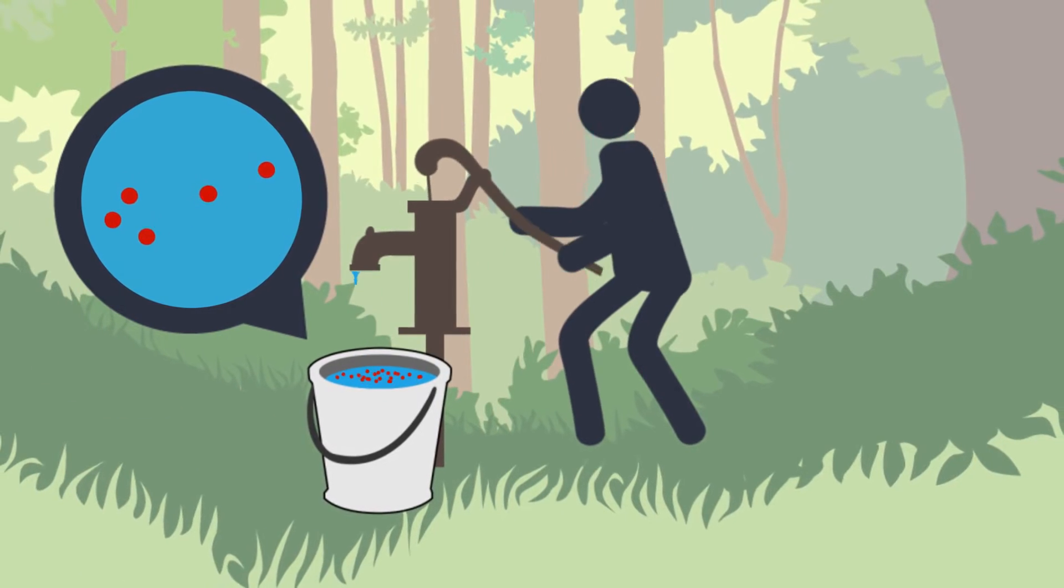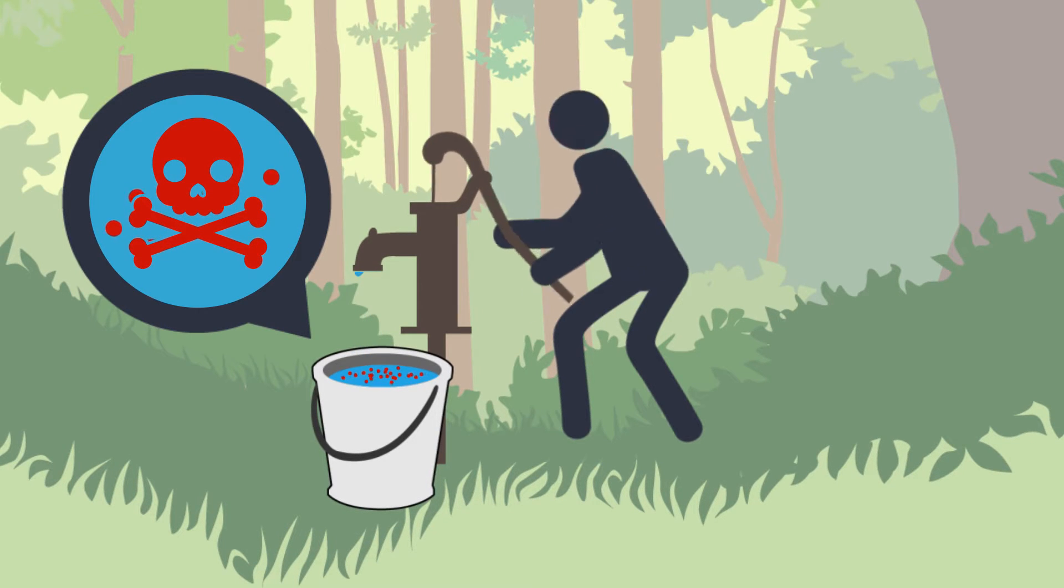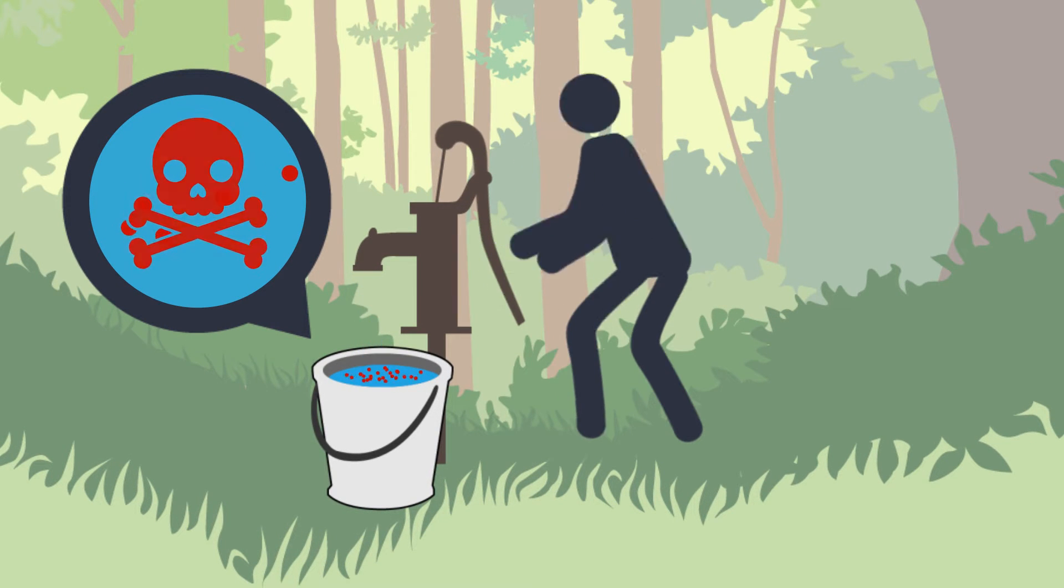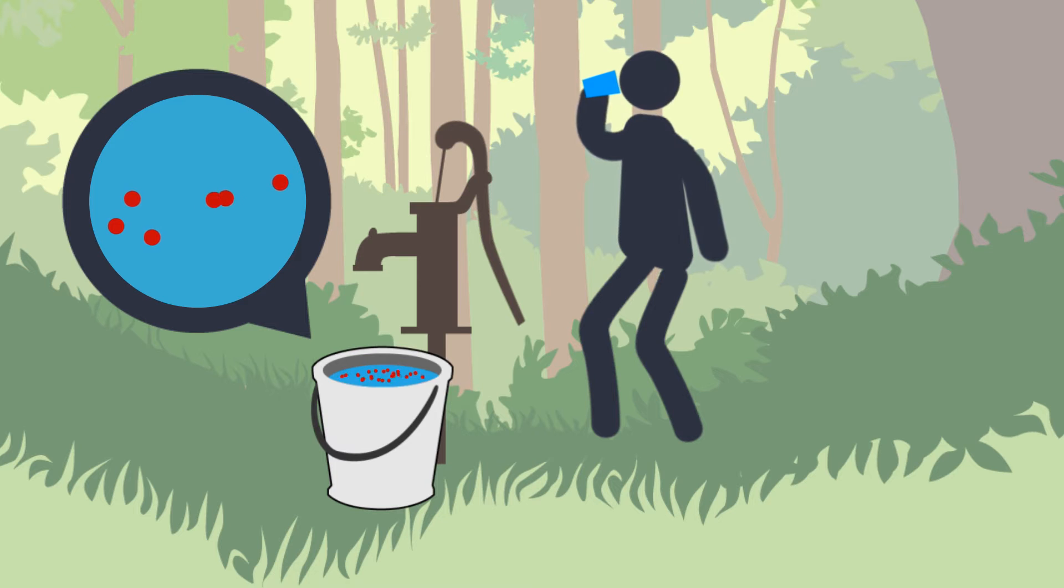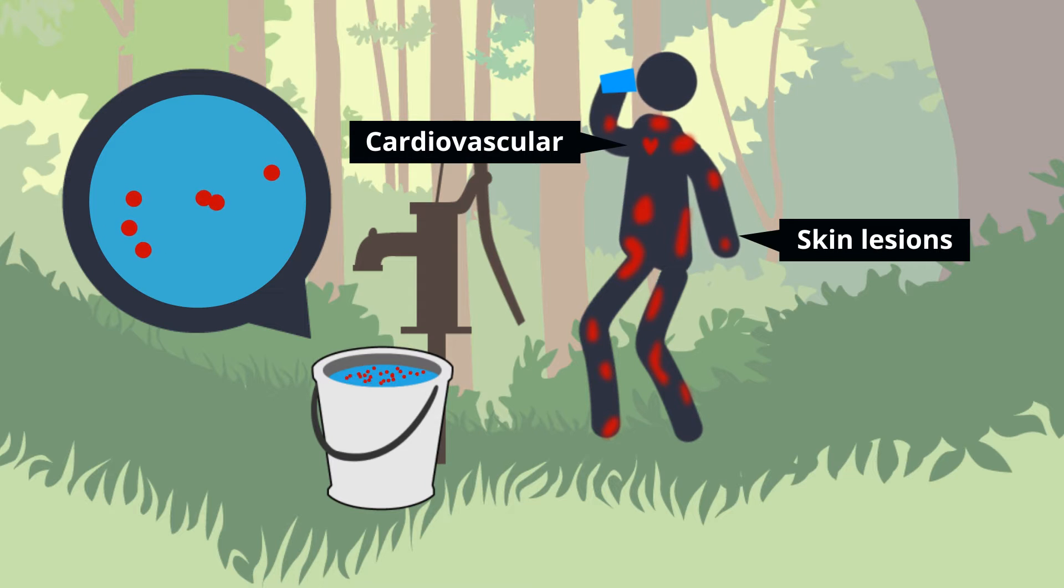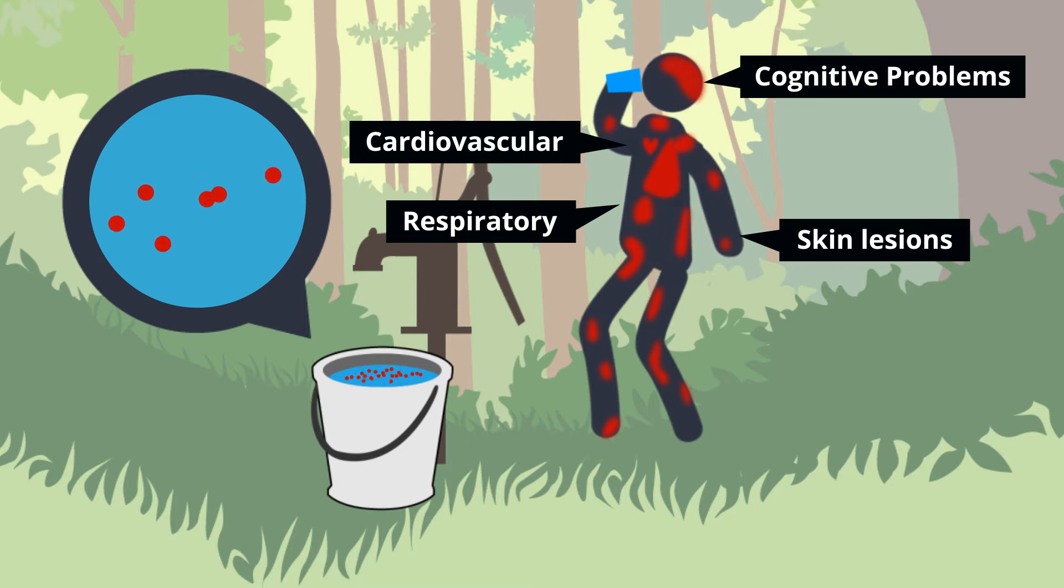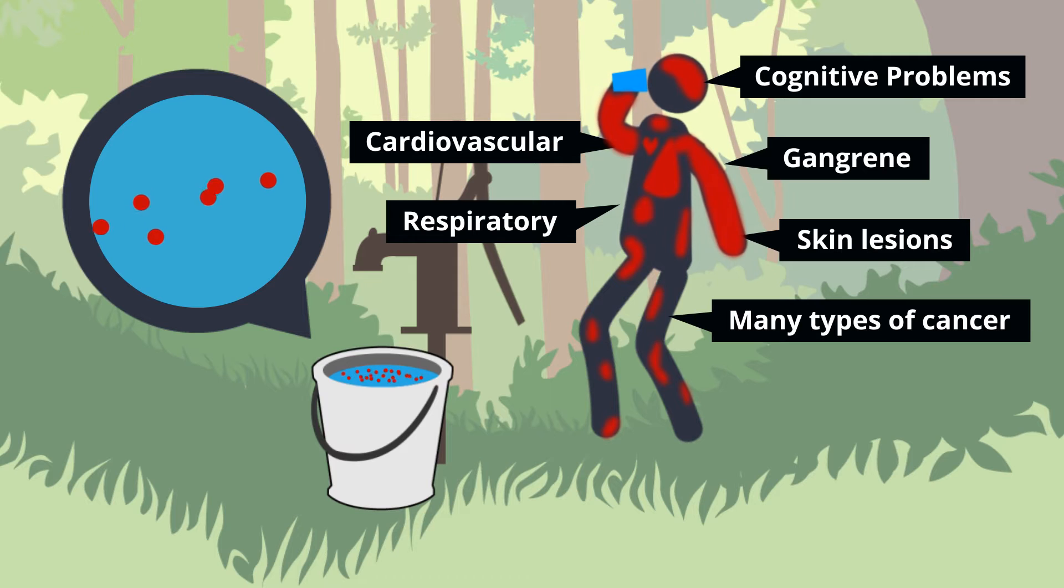Arsenic is tasteless, colorless, odorless, poisonous, and can be naturally present in groundwater. When ingested regularly with drinking water, it accumulates in the body over time and causes skin lesions, cardiovascular, respiratory, and cognitive problems, gangrene, and many types of cancer.